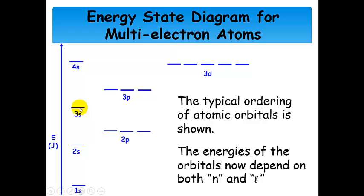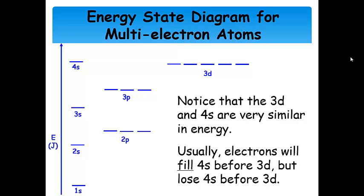The same thing goes for n equals 3. We have 3s, 3p, and 3d, and none of these are at the same energy — 3d is the highest, 3p intermediate. Notice that 4s is very similar in energy to 3d, essentially equal, and we'll talk about why in a while. When we fill electrons or write electron configurations, we fill 4s before 3d, and when we make a cation by removing electrons, we lose those 4s electrons before we lose the 3d.